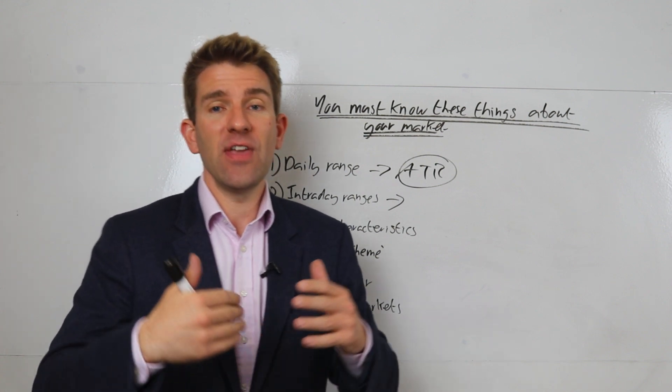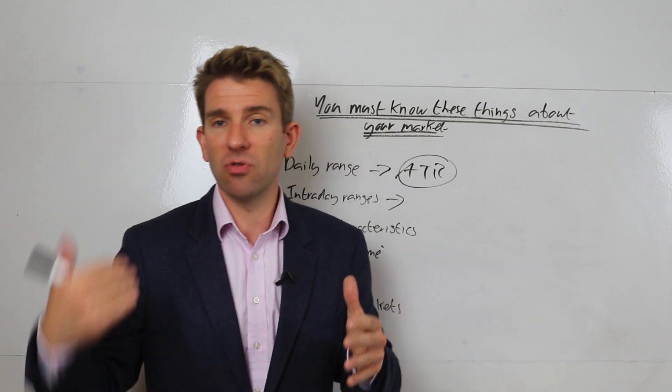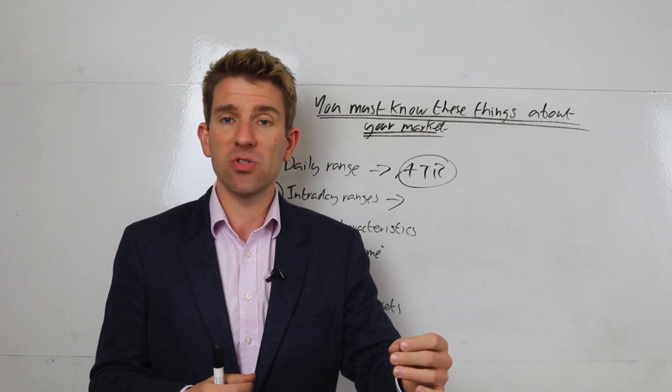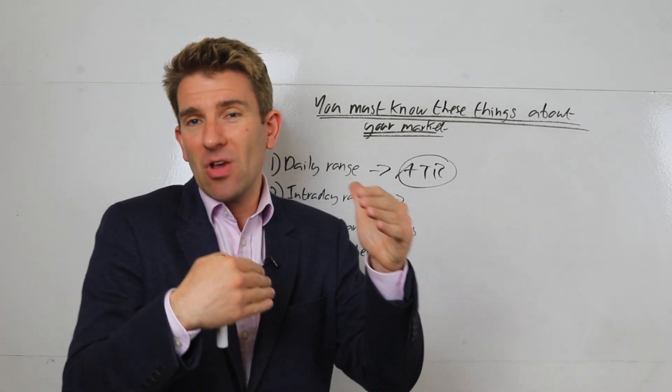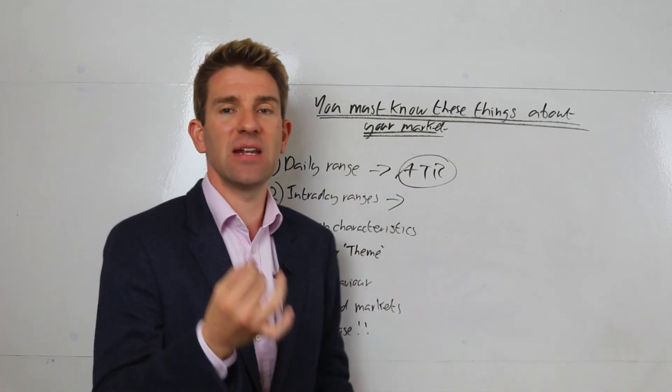So if you like trading over the US open session, for example, that would be 2 o'clock till 3 o'clock UK time, opens at 2:30, and you want to trade one of the USD pairs, you might say, well actually, I know that the likely range is X, so I can frame my trade around that. So just understanding the daily range.